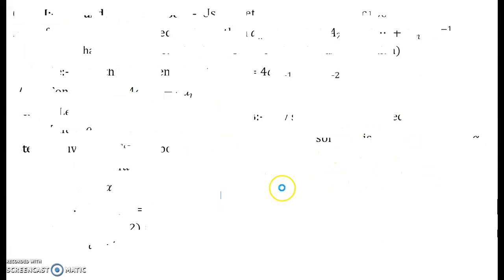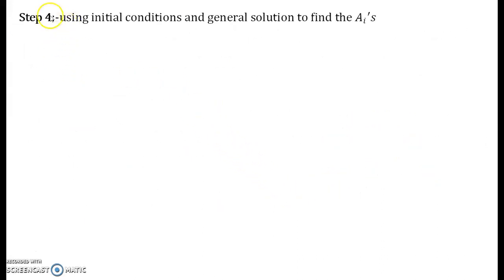So now let us move forward. What happens now is that we are interested in finding the constants A₁ and A₂. We find them using initial condition and the general solution. So initial condition was given to us is a₀ is equal to 1. So you put n equal to 0.